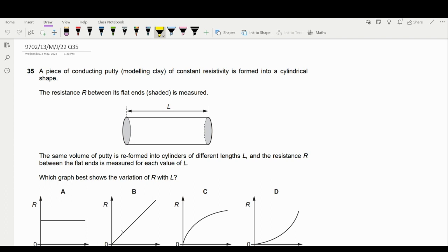The modeling clay of constant resistivity is formed into a cylindrical shape, so resistance R between its flat ends (shaded) is measured. There are two surface areas here. Let the surface area be A, and there's length L.